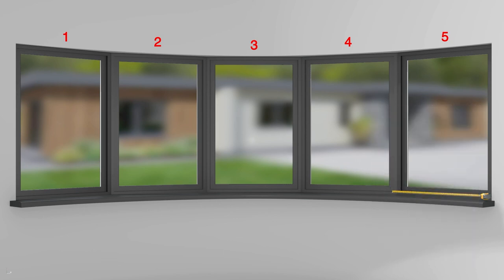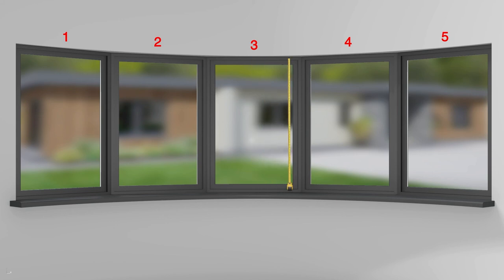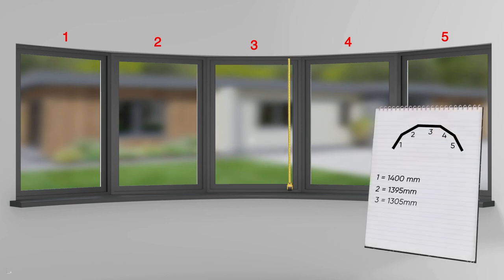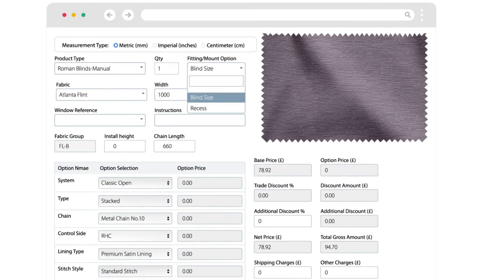Now for the drop, take three measurements — left, middle and right — for each window panel on your bay, and note the set of measurements for a consistent fit. When placing your order with bay window measurements, be sure to select exact fit.